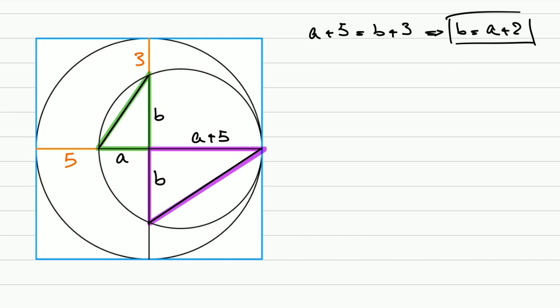Now let's focus on these two triangles. These are right triangles. And this angle, let's call it alpha, is an inscribed angle facing this arc.